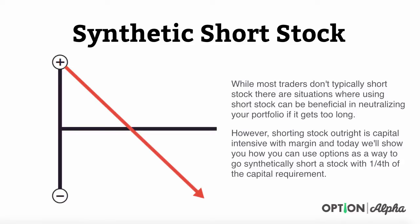Hey everyone, this is Kirk here again at optionalpha.com. In this video tutorial, we're going to help you understand how you can go synthetically short a stock position with about one-fourth of the capital that's typically required using options. While most traders don't know that you can typically short stock, there are many situations where using short stock can be beneficial in neutralizing your portfolio if it gets too long or you've got too many bullish positions. However, shorting stock outright is very capital intensive with margin, and today we'll show you how you can use options to go synthetically short a stock with one-fourth of the capital requirement.